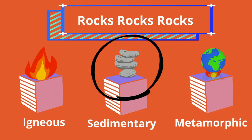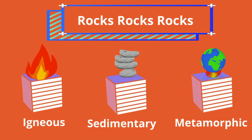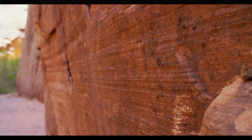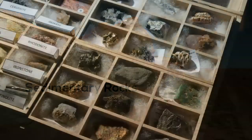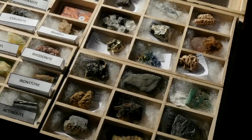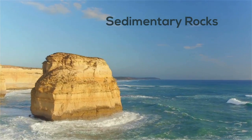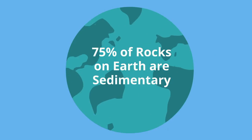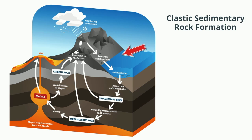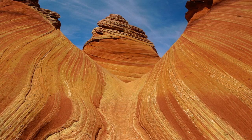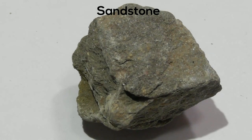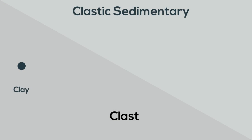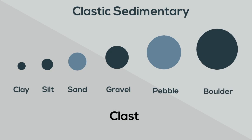Now let's take a look at sedimentary rocks. This rock wall is an example of sedimentary rock. Sedimentary rocks are derived from igneous, sedimentary, and metamorphic rocks. Sedimentary rocks make up around 75% of the rocks on the earth's surface. Clastic sedimentary rocks are the group most people think of when they hear the term sedimentary rocks — they are made up of pieces of pre-existing rocks called clasts that vary in size.